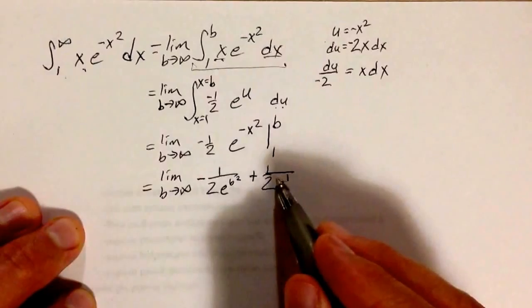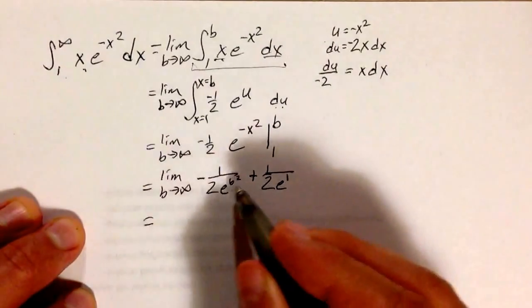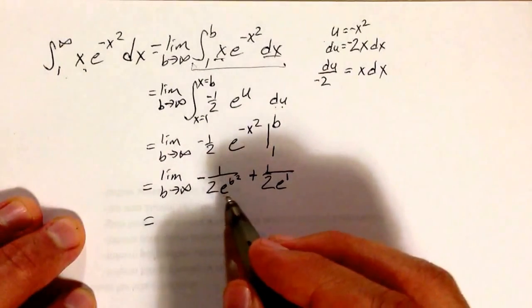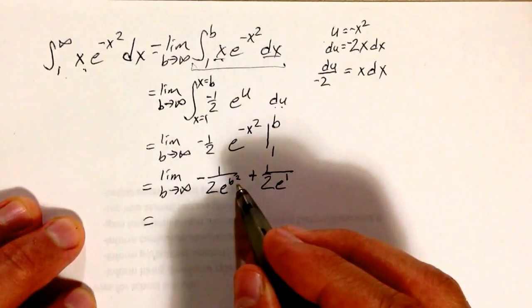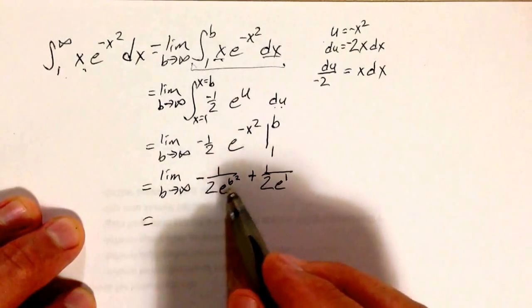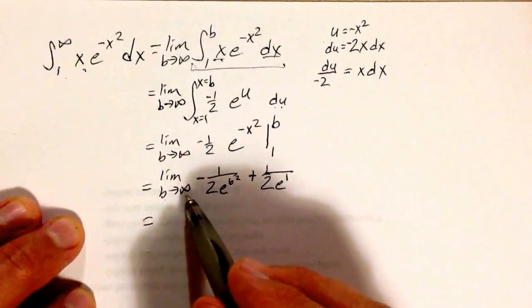This is a number. What happens to e to the b squared as b goes to infinity? Well,